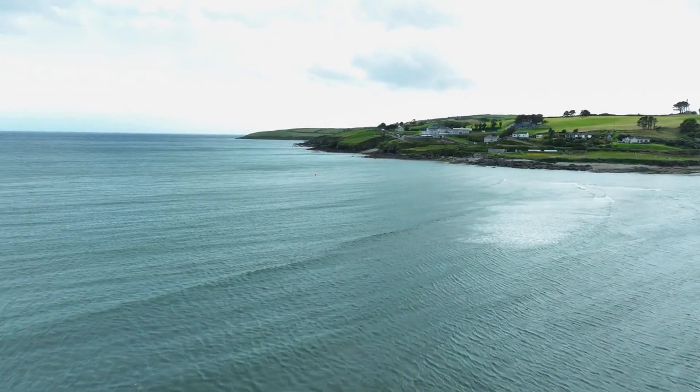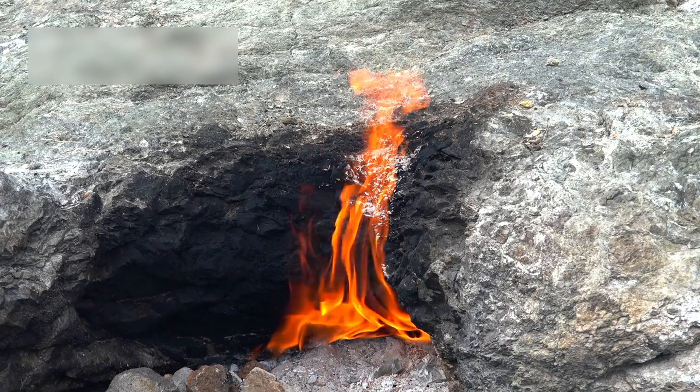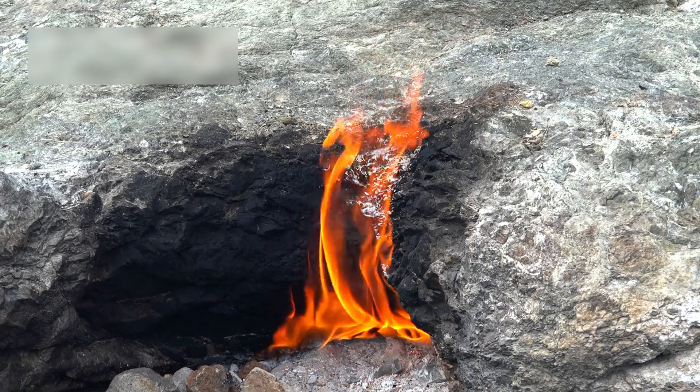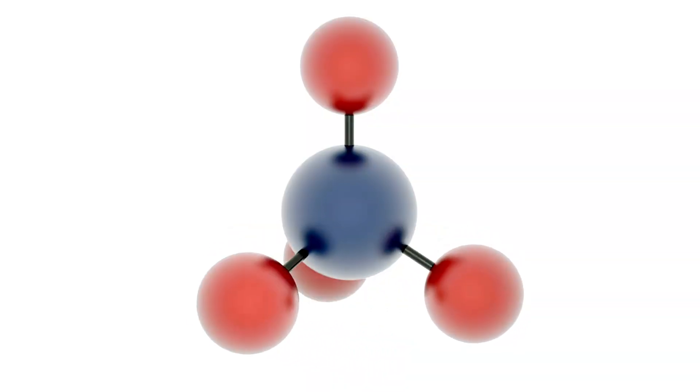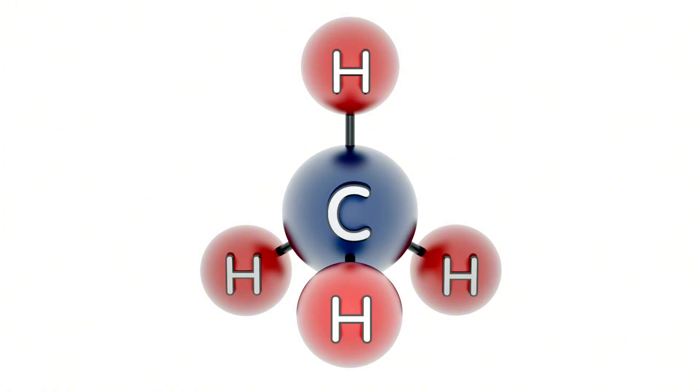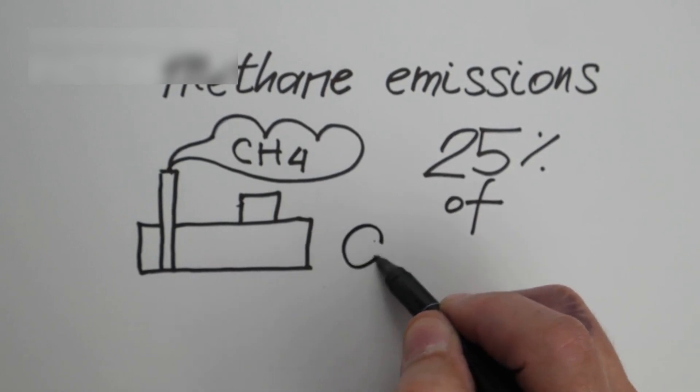Water vapor could mean the planet has oceans or clouds. What's more exciting is that scientists found methane in K218b's atmosphere. Methane usually doesn't last long under solar radiation, so its presence is surprising. Along with methane, carbon dioxide was also discovered.